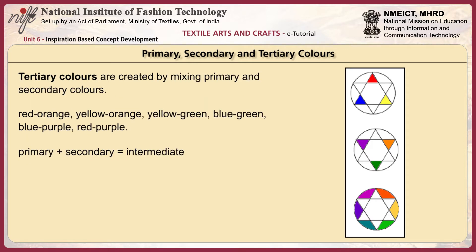Tertiary colors are created by mixing primary and secondary colors: red-orange, yellow-orange, yellow-green, blue-green, blue-purple and red-purple. These are the intermediate colors created from a primary and a secondary.